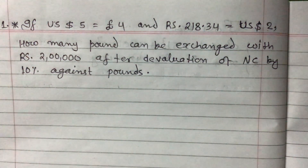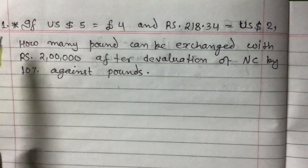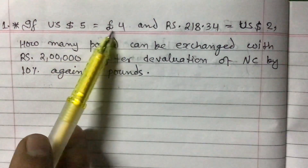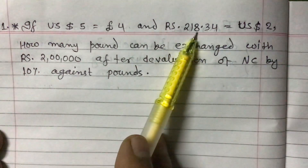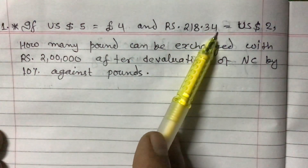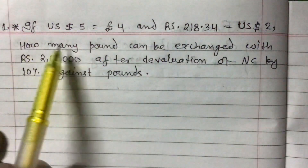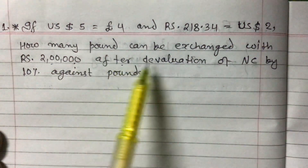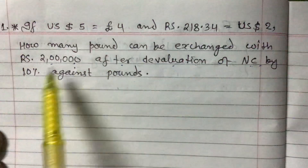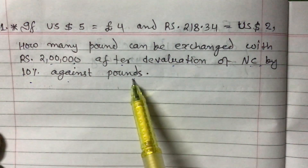Dear students, today I am going to teach you a problem related to money and exchange. The question is: if US dollar 5 equals pound 4, and rupees 218.34 paisa equals US dollar 2, how many pounds can be exchanged with rupees 2 lakh after devaluation of Nepalese currency by 10% against pound?